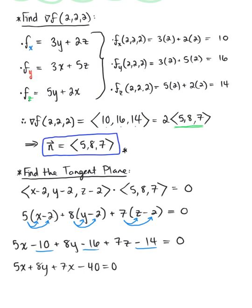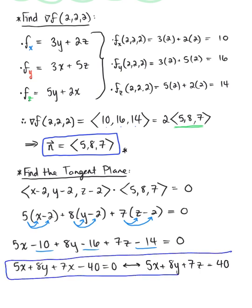There's nothing wrong with this answer. Or you could bring the constant to the right-hand side and write 5x + 8y + 7z = 40. Either way is correct. This is our final answer for the equation of the tangent plane to the implicitly defined surface at point (2,2,2).